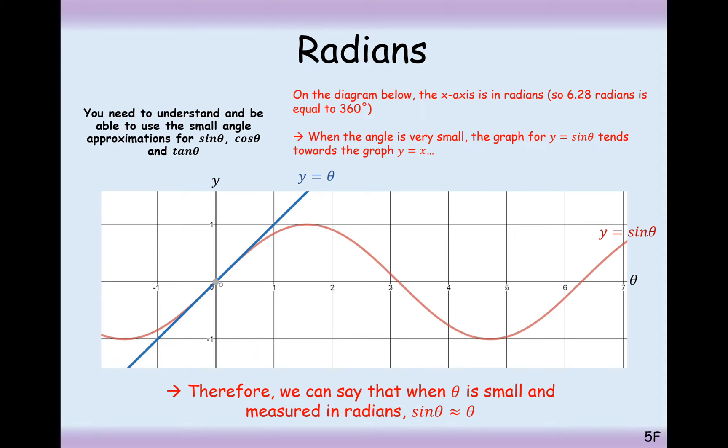Notice here how our scale is going up in 1, 2, 3, 4, 5, 6, 7, not 90, 180, 270, 360. So it has to be in radians mode. When it's in radians, the small angle approximation is really good.